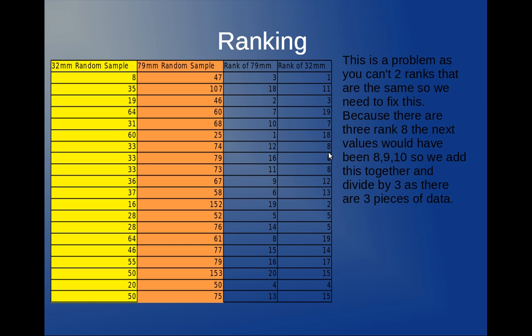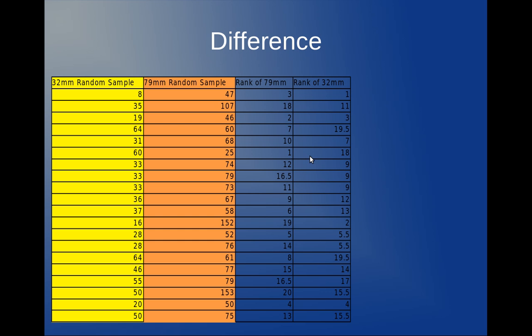So over here I have a problem. I have three 8s and I can't have that in Spearman's. So I have to average out the ranks. So what I would do is the 8th rank, and this represents the 9th and the 10th. Add them together to get 27, and then divide it by 3 to get 9. And that would give me the average rank. So these are all the ranks averaged out.